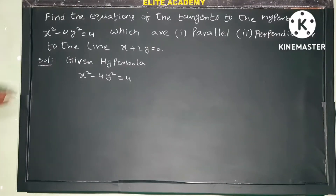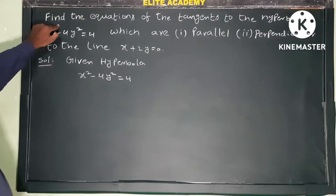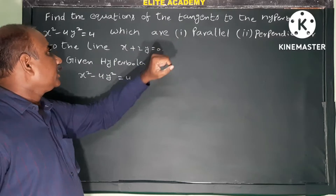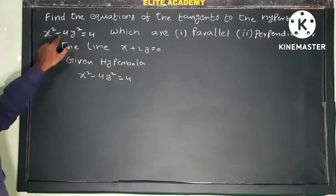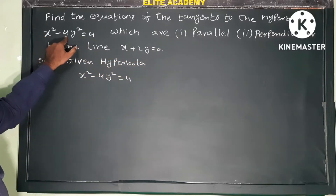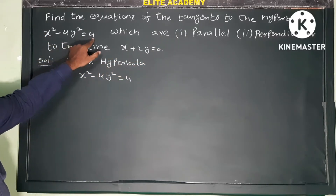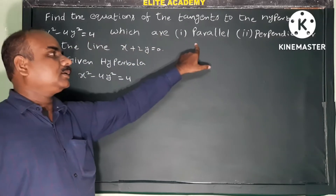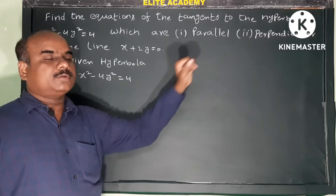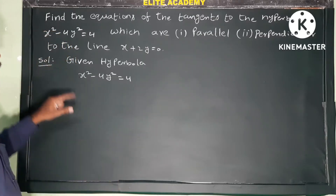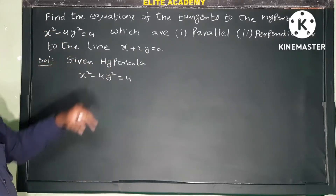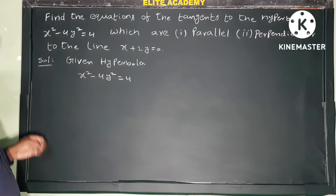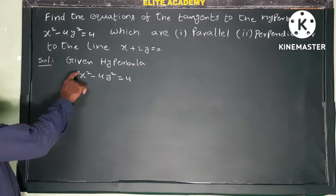Okay, next question: find the equation of the tangents to the hyperbola x squared minus 4y squared equals 4, which are parallel and perpendicular to the line x plus 2y equals 0.